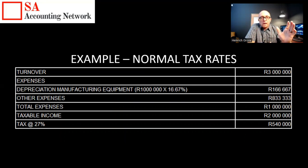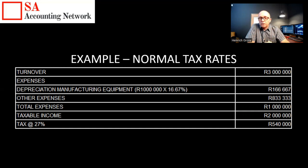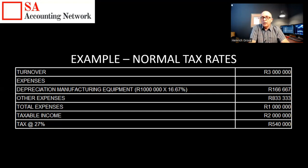Let's say we've got a manufacturing entity doing a turnover of R3 million for the year. We bought R1 million worth of sewing machines. Under normal depreciation — written off over six years at 16.67% — our depreciation deduction is R166,667. With other expenses of R833,000, total expenses are R1 million, giving a taxable income of R2 million. Applying the tax rate of 27% to that R2 million, the tax liability for the year is R540,000.